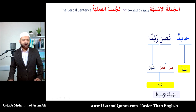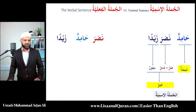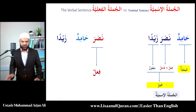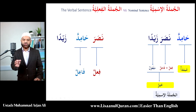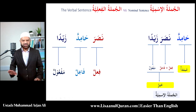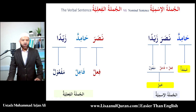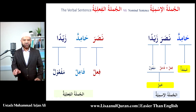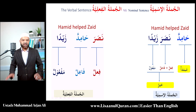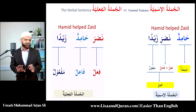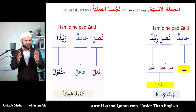Now look at another sentence with slightly different word order: 'Nasara Hamidun Zaydan.' The first part is the verb, the second is the doer — and remember the golden rule: the doer is always in the rafa' status, as you can see with Hamidun. The object is always in the nasb status, as you can see with Zaydan. So we have two sentences — one jumlah ismiyyah, one jumlah fi'liyyah — and the translation in English is exactly the same: 'Hamid helped Zayd.'